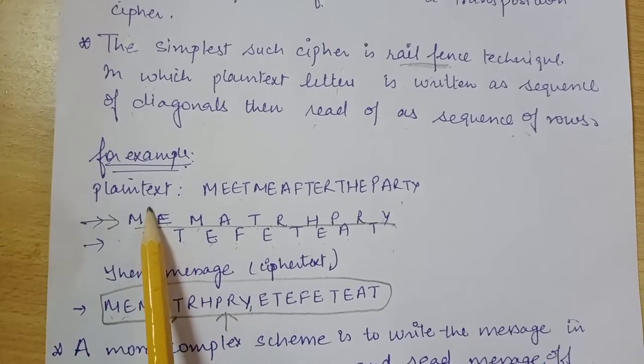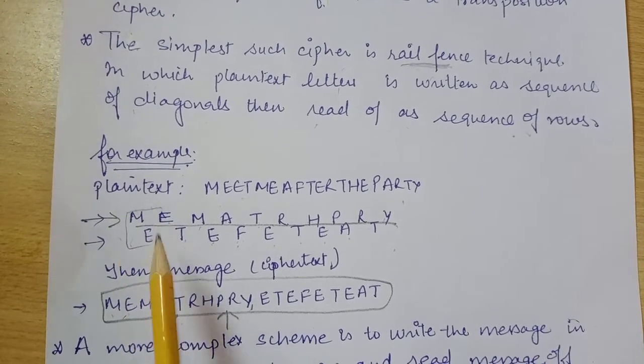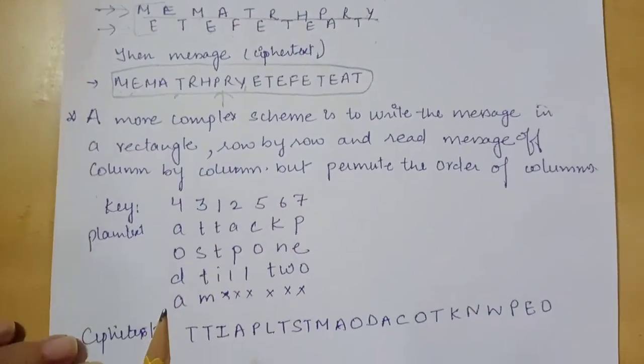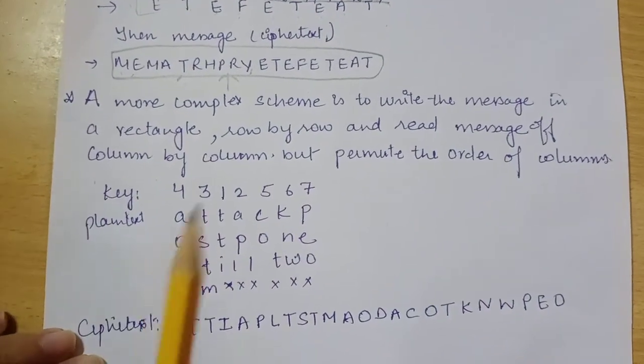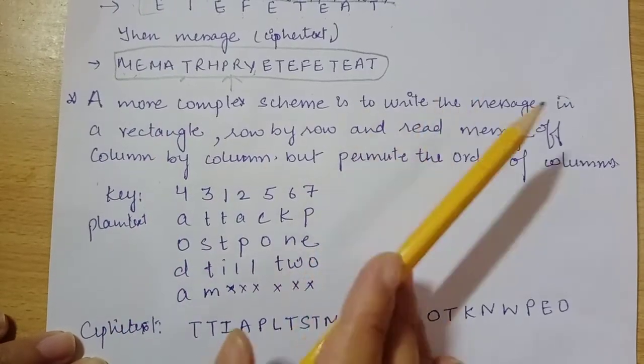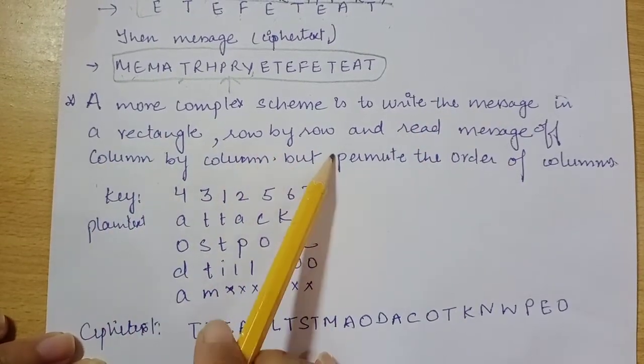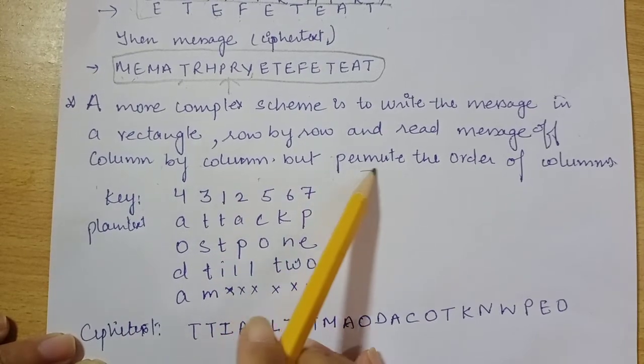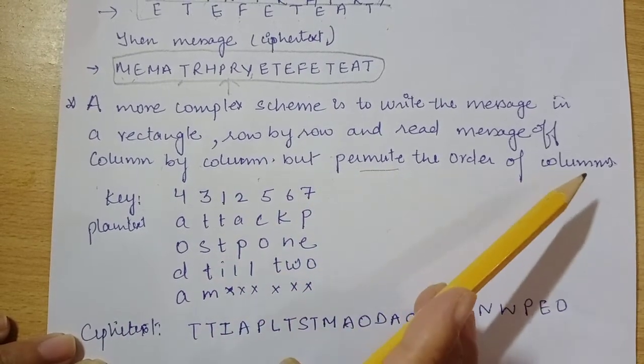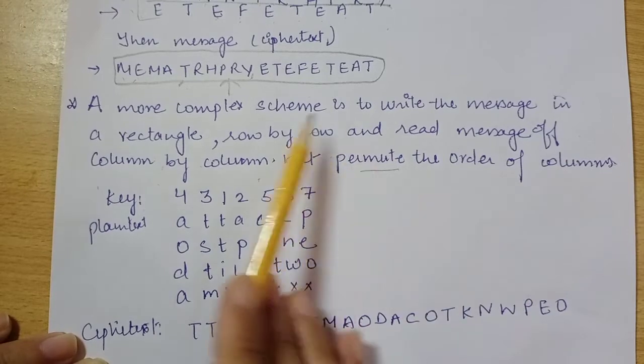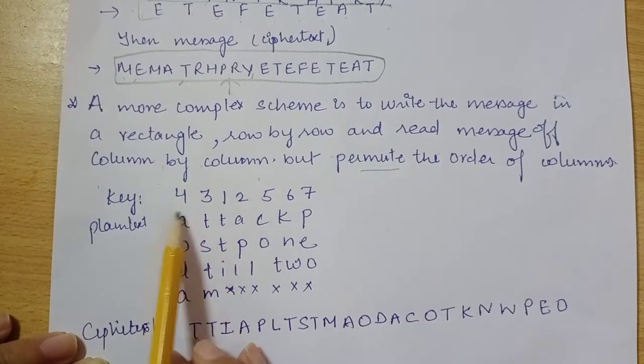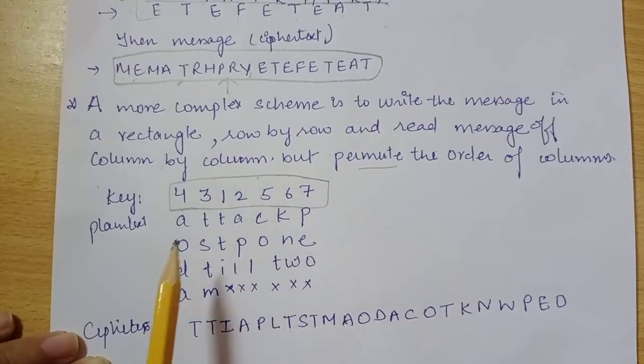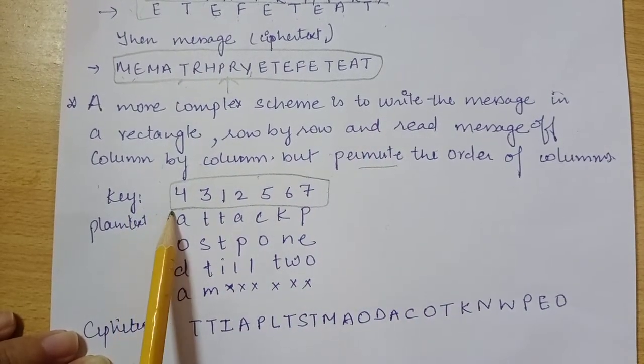A more complex scheme of transposition is to write the message in a rectangle row by row and read the message column by column, but permute the order of columns - so the columns that we write, their order is also shuffled. For example, this is a key. In rail fence there is no key, this is the simplest one, so in this case there is a key.